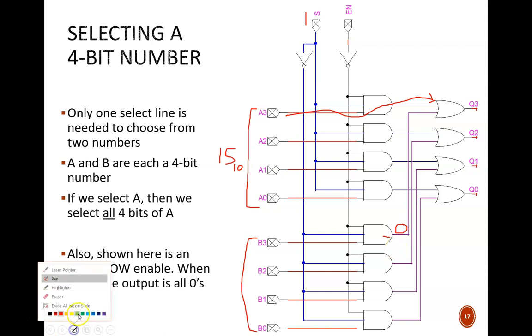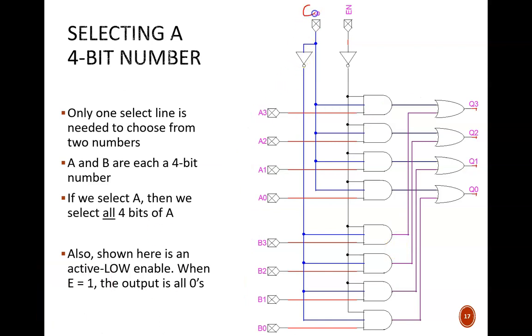Conversely, if s equals 0, then the b3 passes through and a3 is ignored. The exact same pattern is used for deciding between a2 and b2, a1 and b1, a0 and b0.